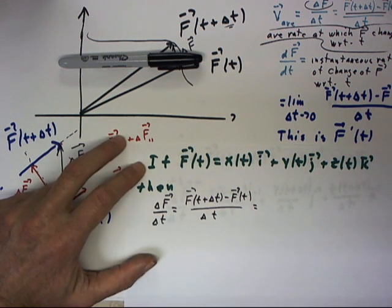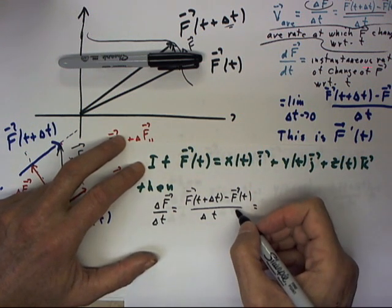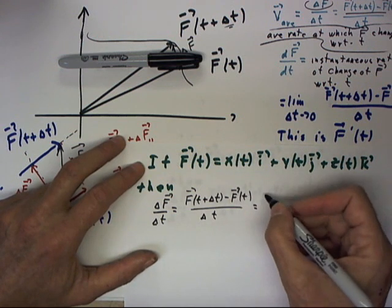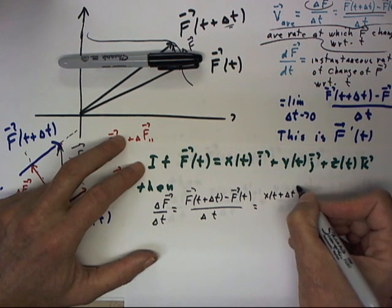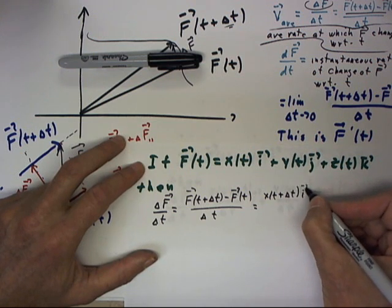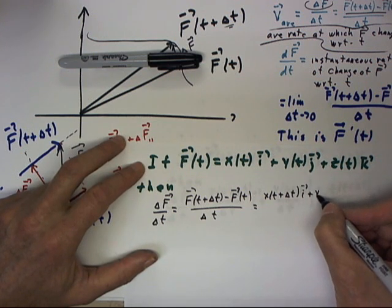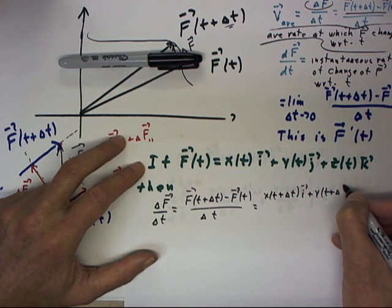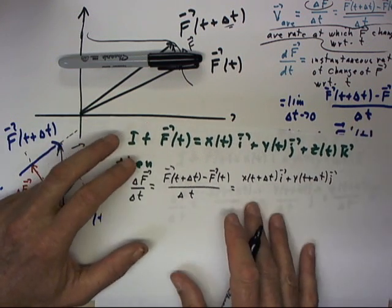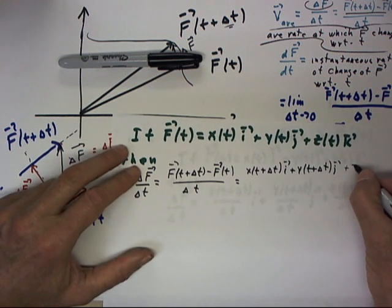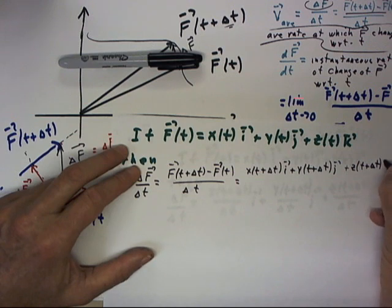And that's going to be equal to what? Well, f of t plus delta t is x of t plus delta t i plus y of t plus delta t j plus z of t plus delta t k.